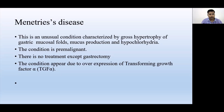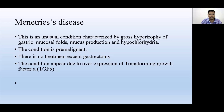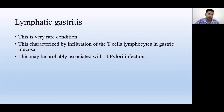Menetrier's disease occurs due to overexpression of transforming growth factor alpha (TGF-α). TGF-α is secreted during wound healing in the inflammatory phase to initiate the healing process. Excessive secretion of TGF-α leads to overproduction of gastric mucosal folds, causing hypochlorhydria. This is a very rare condition.